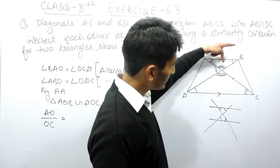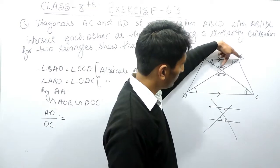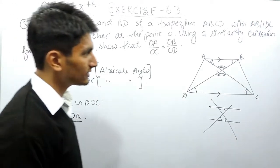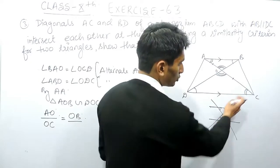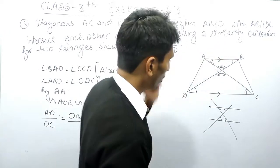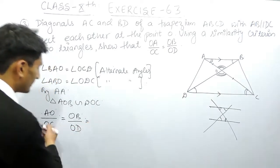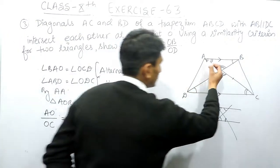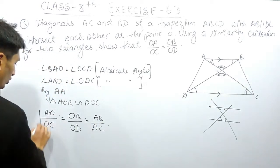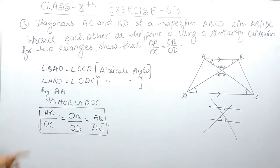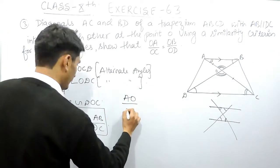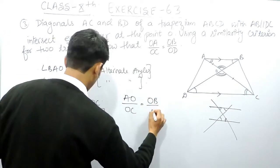Now consider side OB, which is opposite to another angle. The side opposite to the equal angle in the other triangle must be OD, so the side corresponding to OB is OD. The third side AB in triangle AOB corresponds to side DC in triangle DOC. From the first two pairs, we can say that the ratio AO to OC must be equal to the ratio OB to OD.